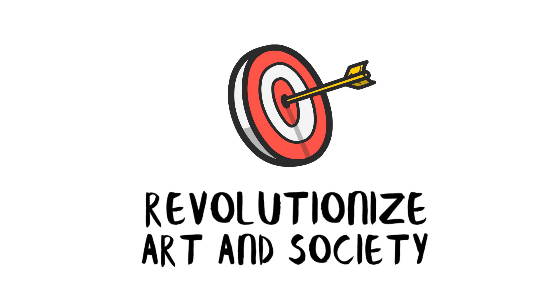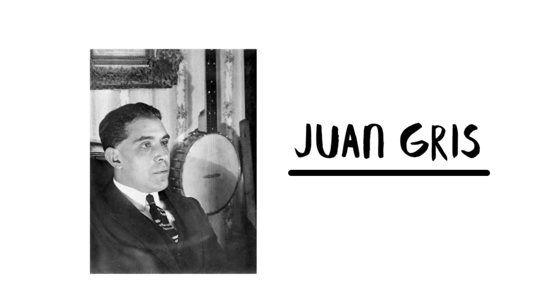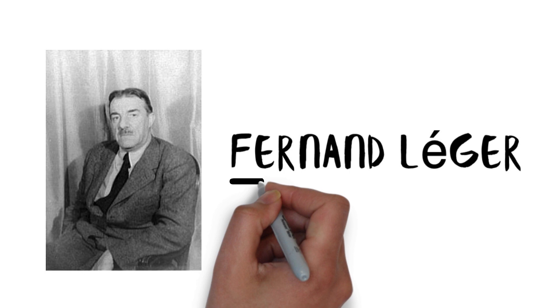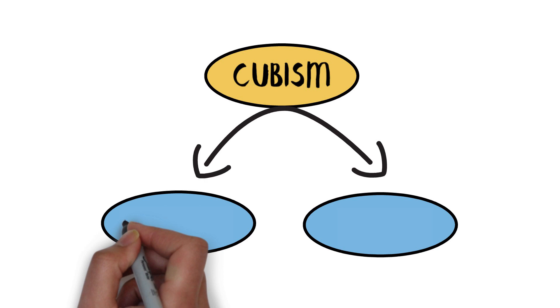Artists after World War I took cubism in new directions by exploring its principles in different contexts. Some artists, such as Juan Gris, continued to develop cubist aesthetics but introduced more recognizable subject matter. Others, like Fernand Léger, incorporated elements of cubism into their exploration of the machine age and urban life. Additionally, the influence of cubism can be seen in the development of abstract art movements such as Orphism and Purism.